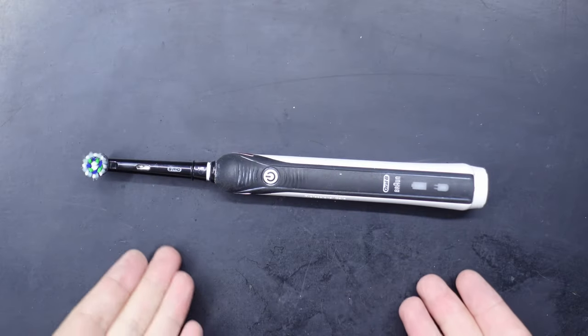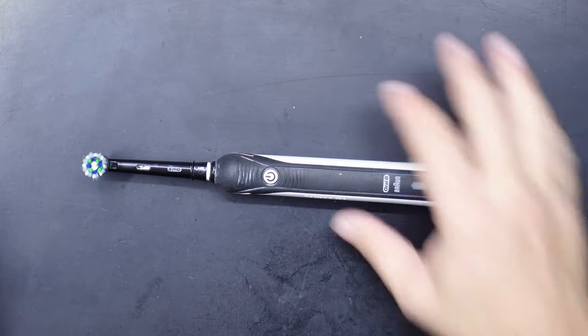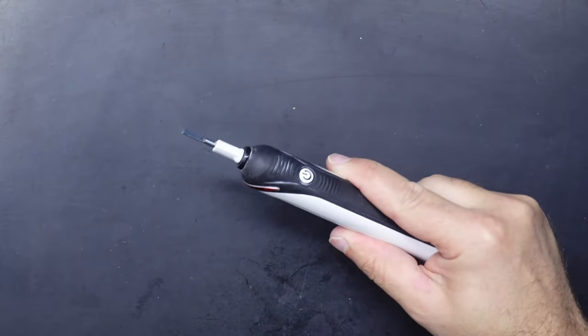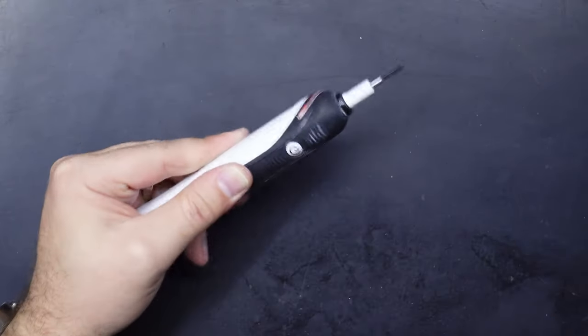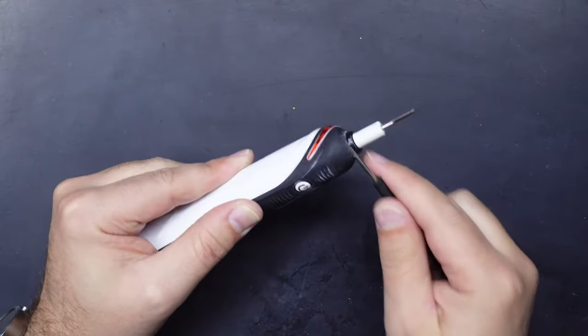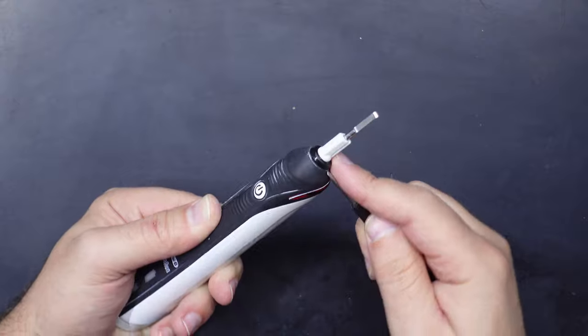Let's get this open and see what we can find. Right, so obviously the first thing we need to do is open this up. I'm just going to start by removing the brush head, and there's a little sort of washer looking thing here that needs to come off.